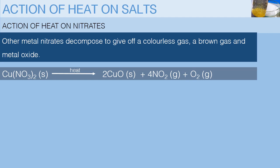So basically, copper 2 nitrate is usually blue-green in color, and copper 2 oxide is black. This is the brown gas, and a colorless gas.